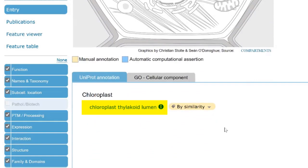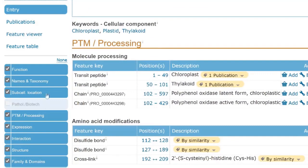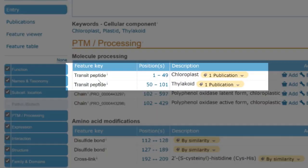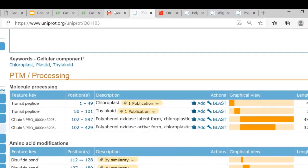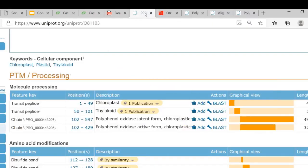In order to reach the chloroplast thylakoid lumen, the protein needs a transit peptide or signal peptide or sometimes called trafficking peptide. So it reaches the thylakoid lumen inside the chloroplast. So the first 101 amino acids, as you saw here in the sequence, are all used for the signaling.